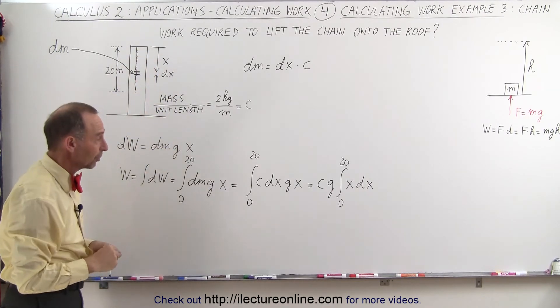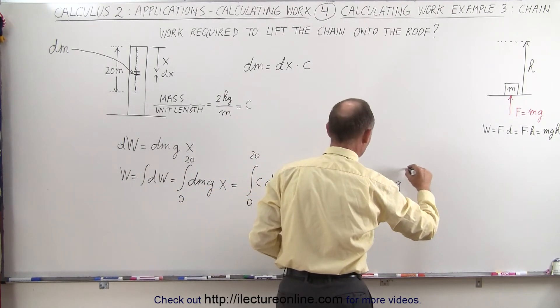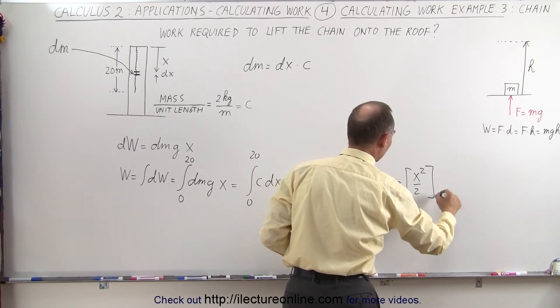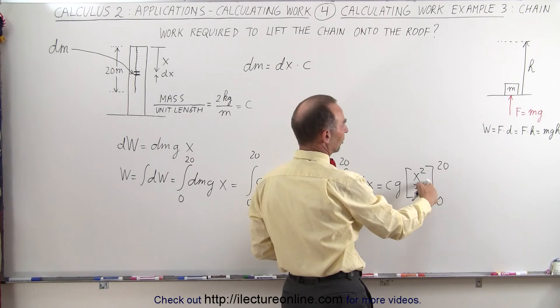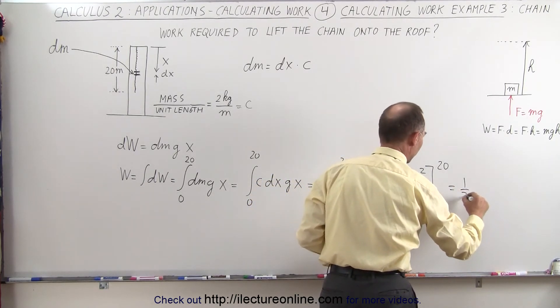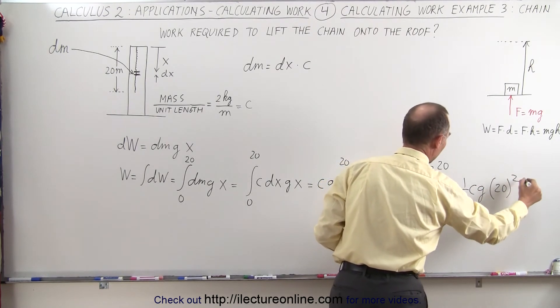Let's go ahead and plug in the numbers. Well first we have to integrate. Let's do that first. This is equal to c times g times x squared over 2, evaluated from 0 to 20. Plug in the lower limit to get 0. Plug in the upper limit, you get, well the one half I'll put it up front, times c times g times the quantity 20 squared.